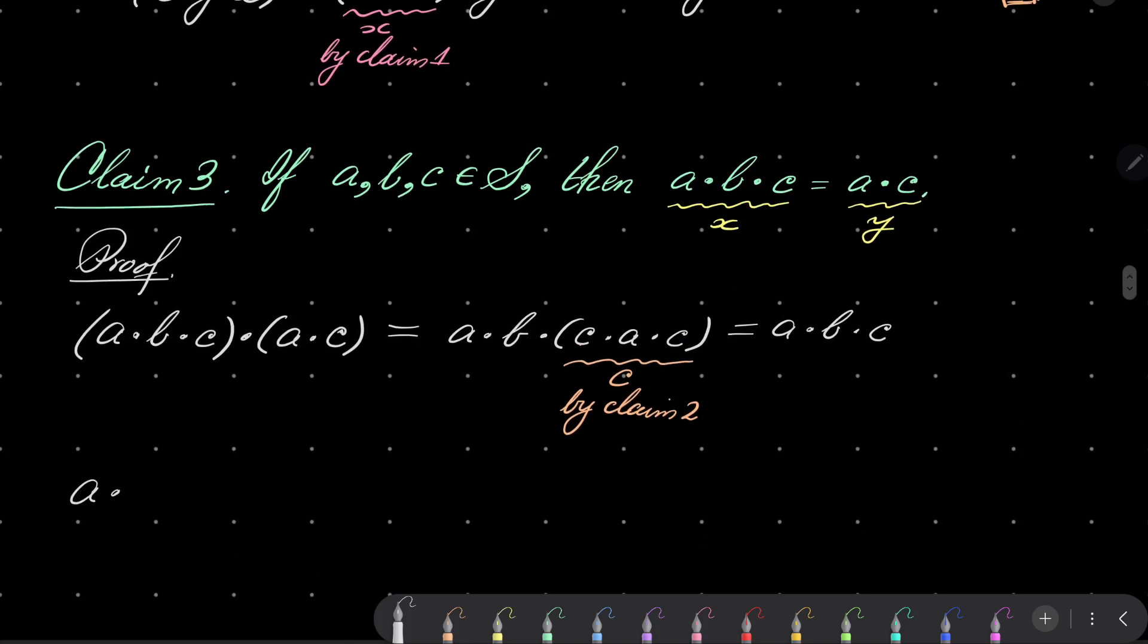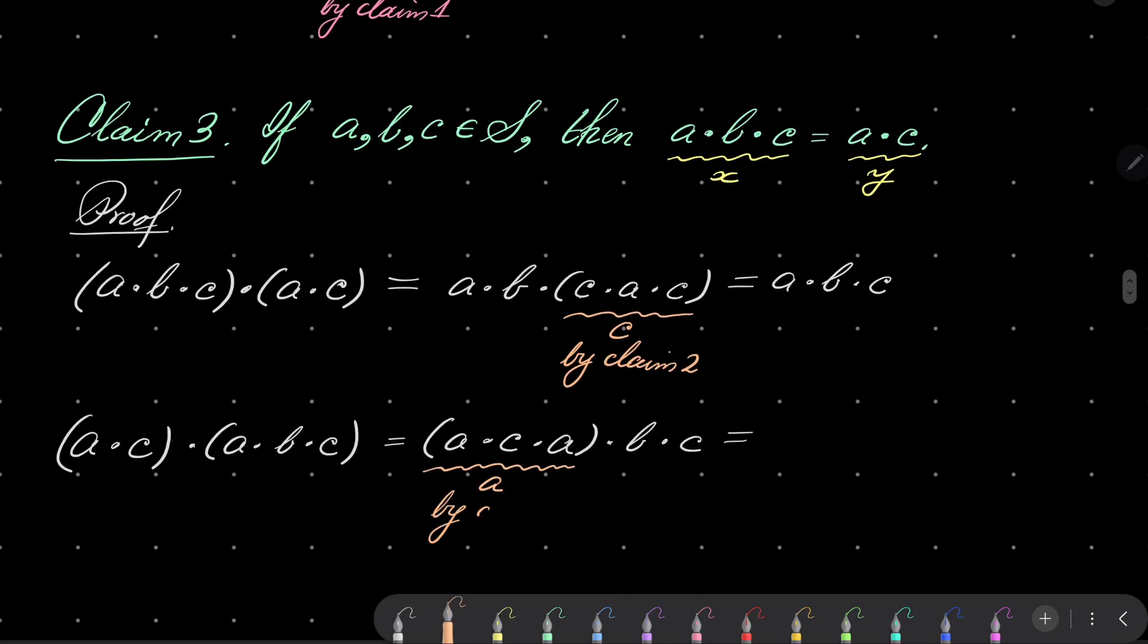What about a·c·a·b·c? Well, now I will put parentheses in the following manner: a·c·a·c·a·b·c. Again, by claim number two, this part right here is a. So we have again a, b, c. We see that they are the same, which means that a·b·c equals a·c, which closes the last proof, which closes the proof of claim number three, which was our result.